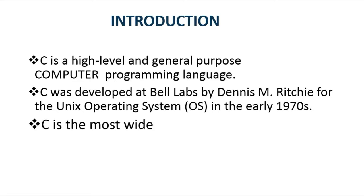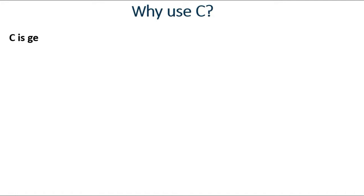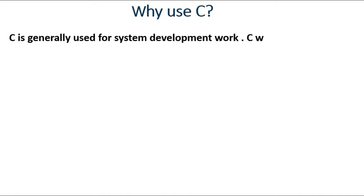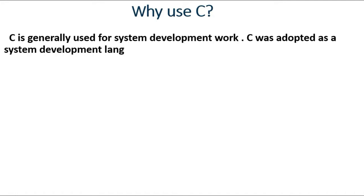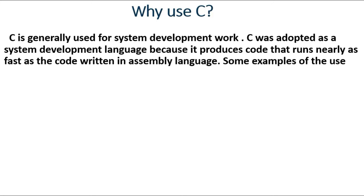It is one of the most widely used computer languages. After that we discuss about the importance of C and why we use it. Generally it is used for system development, as it was adapted as a system development language because it produces code that runs nearly as fast as code written in assembly language.